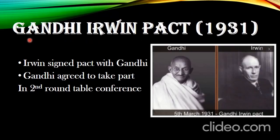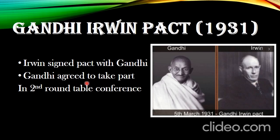Next is the Gandhi-Irwin Pact of 1931. The British could not accept everything Gandhi said. Gandhi did not attend the first Round Table Conference, which was a great loss for the British, as they could not control the people. So they wanted to please Gandhi and called him for a talk, which is known as the Gandhi-Irwin Pact. It happened in 1931 — Irwin was the Governor General of India at that time. They both signed, and Gandhi agreed to take part in the Second Round Table Conference, which was to be held in London.